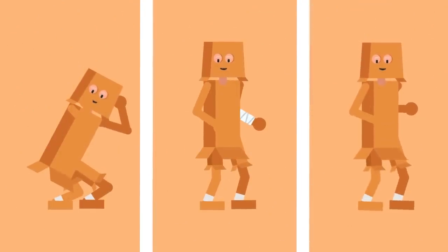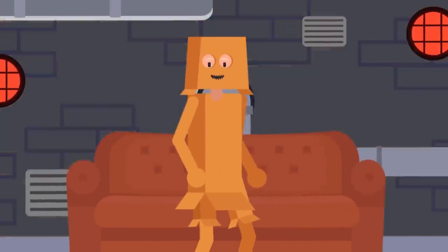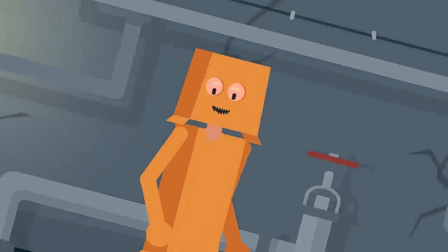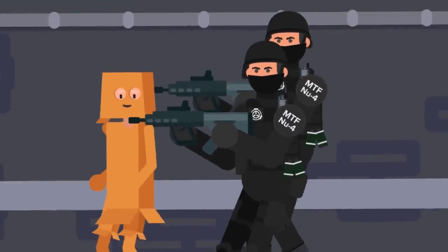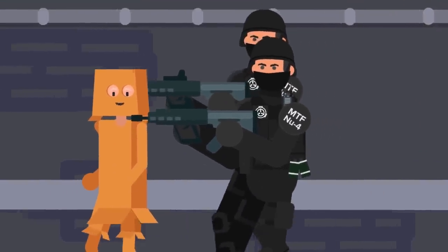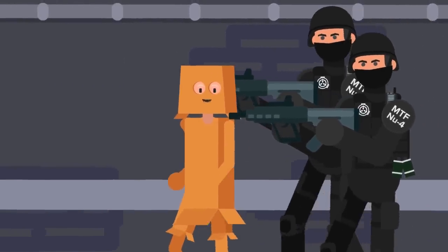Occasionally, if it experiences fear, damage, or stress, it may demanifest and appear in tunnels elsewhere. At that point, the Box Cutters are deployed to collect 3663 once again and bring him back to Site-54.